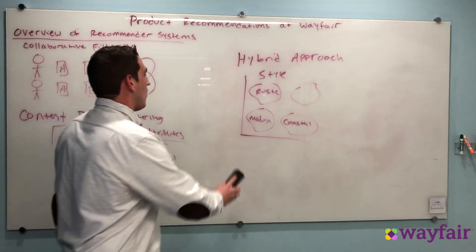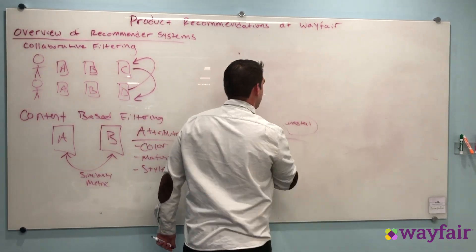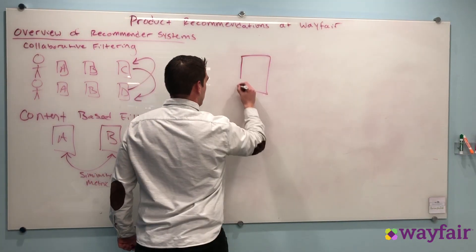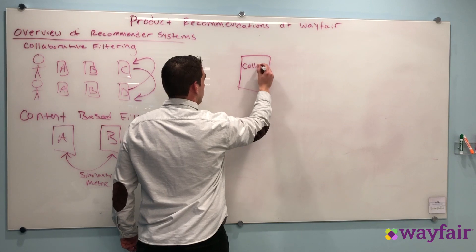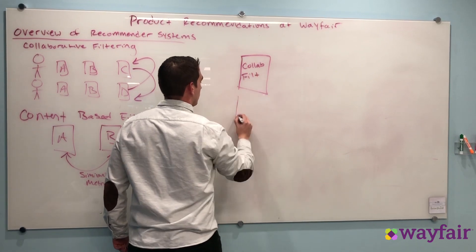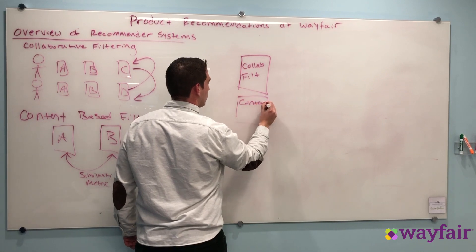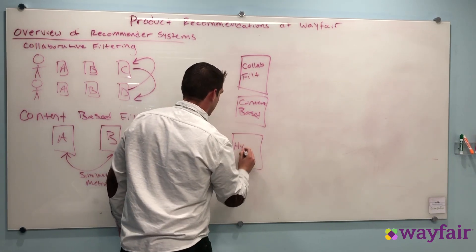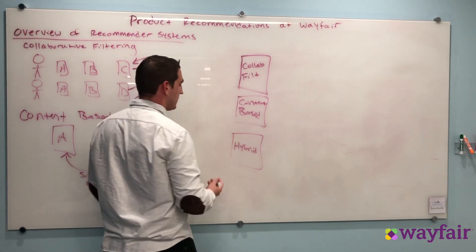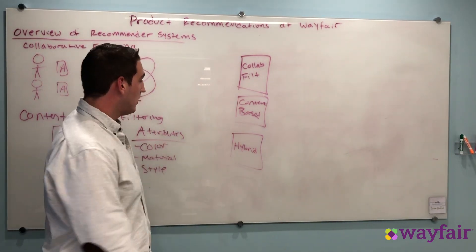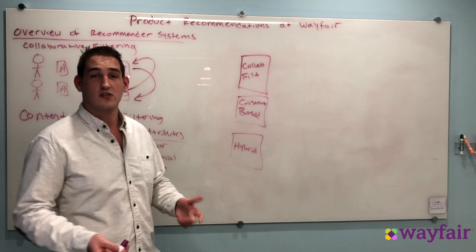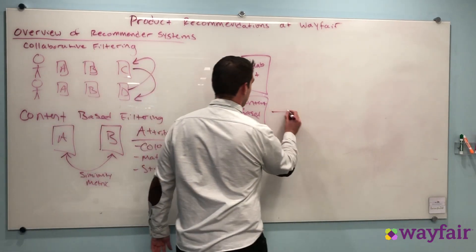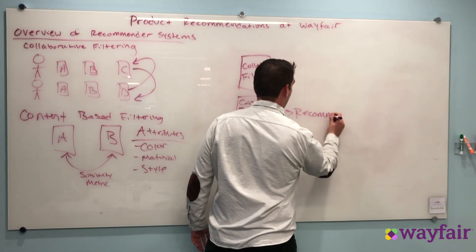We can use neural network architectures that encode both behavioral and content information to create a space like this. Now the final question is how do we use all of these approaches together to create one experience for an individual customer? We have behavioral-based collaborative filtering models, content-based models based on the attributes about the products themselves, and these hybrid approaches. The goal is to leverage these recommender systems to create one personalized experience. So we look at the information we have about a customer in real time, like their browsing history, and feed it into each one of these models to generate a set of recommendations.